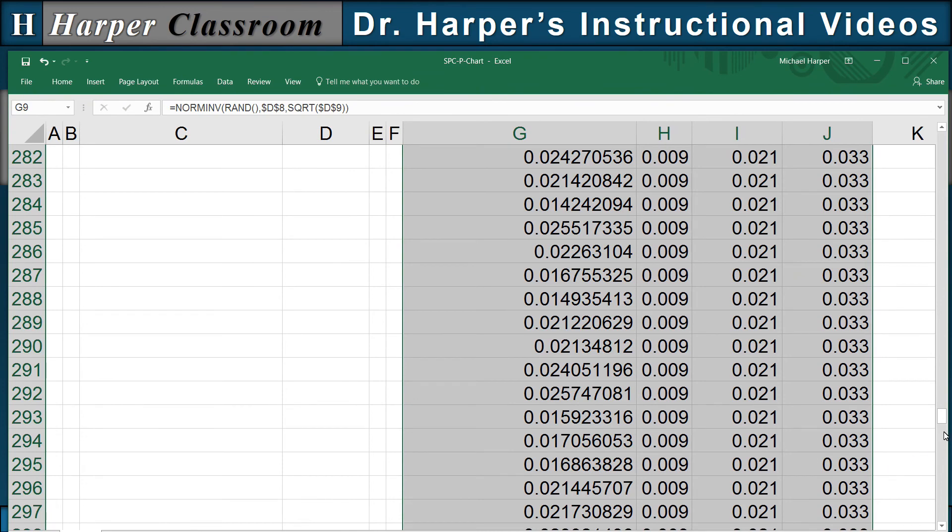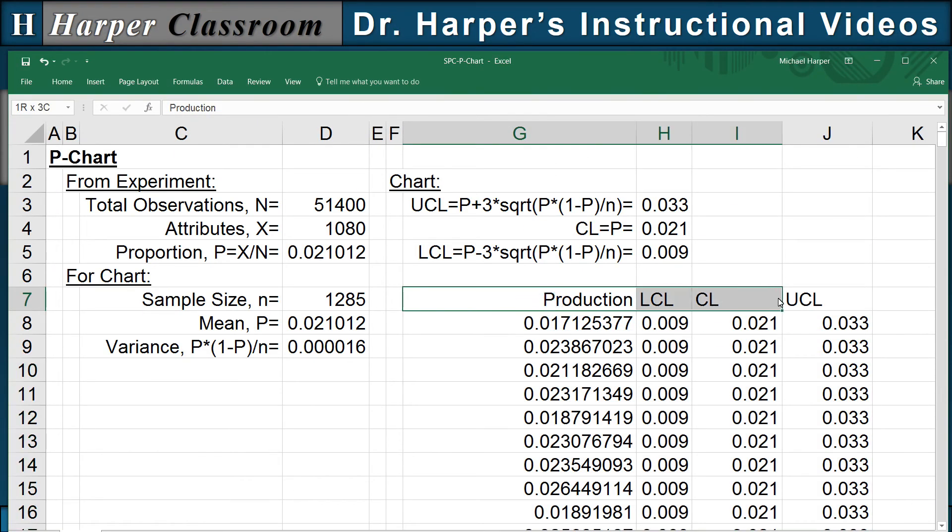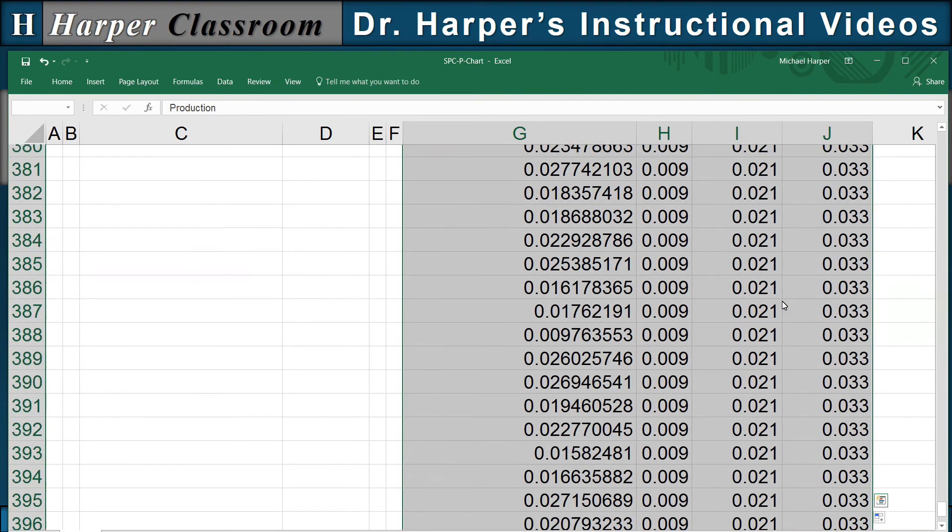And so now what I want to do is plot these to show what the control chart looks like. I'll highlight these, control, shift, down arrow.